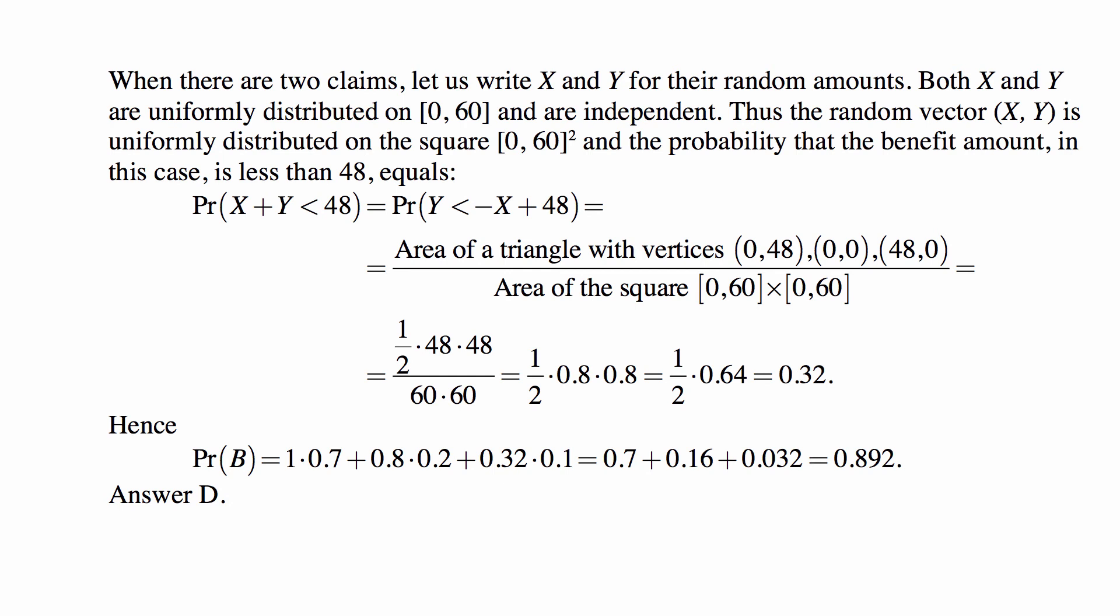And what is the area of that triangle? Well, it's a right triangle with two sides of 48, and then the hypotenuse is the line from the point (0,48) to the point (48,0). So it's really half a square, [0,48] × [0,48]. So the area is 1/2 × 48 × 48, and the area of the square [0,60] × [0,60] is 60 × 60. Now 48 over 60 is 0.8, as we already calculated, so this is the same as 1/2 × 0.8 × 0.8, or 1/2 × 0.64, so it's 0.32.